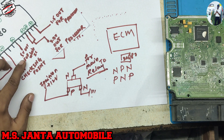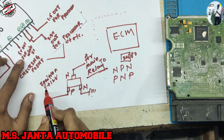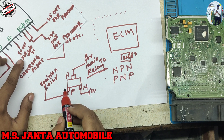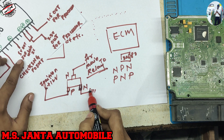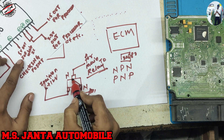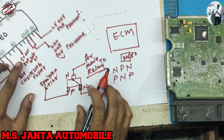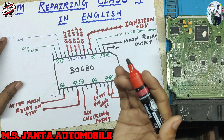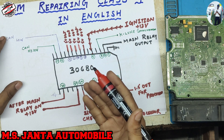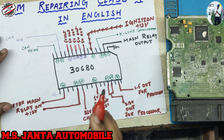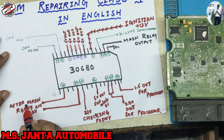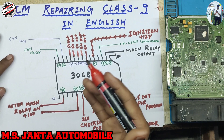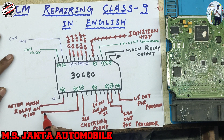A transistor has some basic operation: when we apply 12 volts to the P point, the N side connects to ground and our main relay turns on. When the main relay gets ground, it outputs 12 volts from the battery. After the main relay turns on, 12 volts comes to pin number 20 and pin number 23.